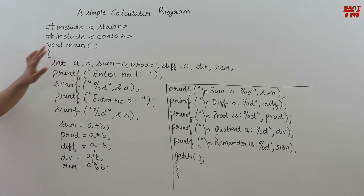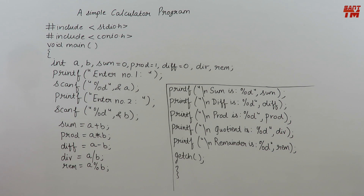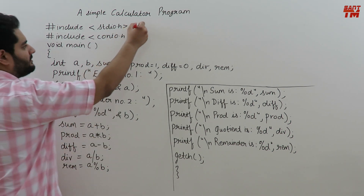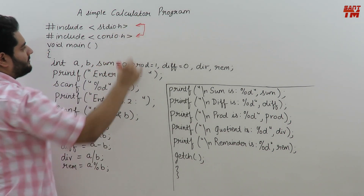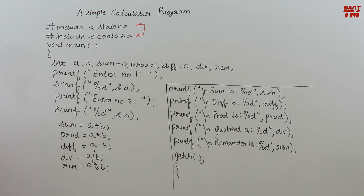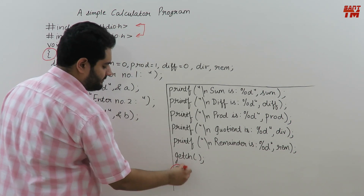This is a simple C program for a calculator. Let us perform calculations in C. I will explain this line by line and you note it down. These two statements — the header statements hash include stdio and conio — should now be clear to you. Then comes the main function: at this opening brace the main function is starting, and here it is ending.